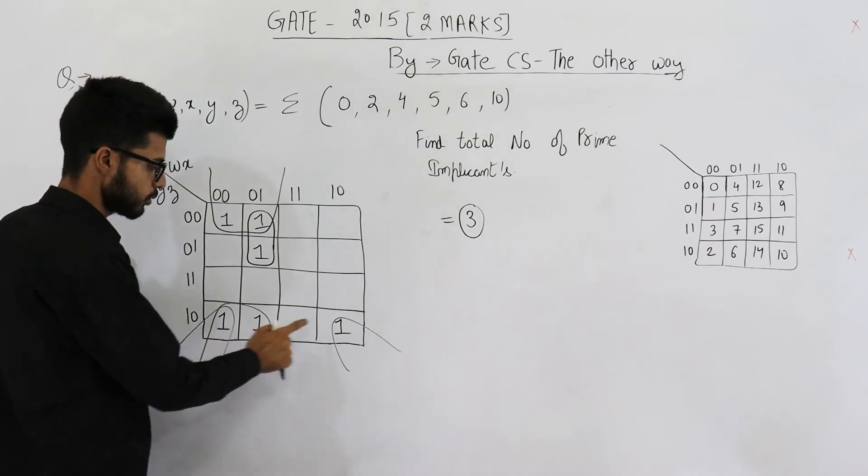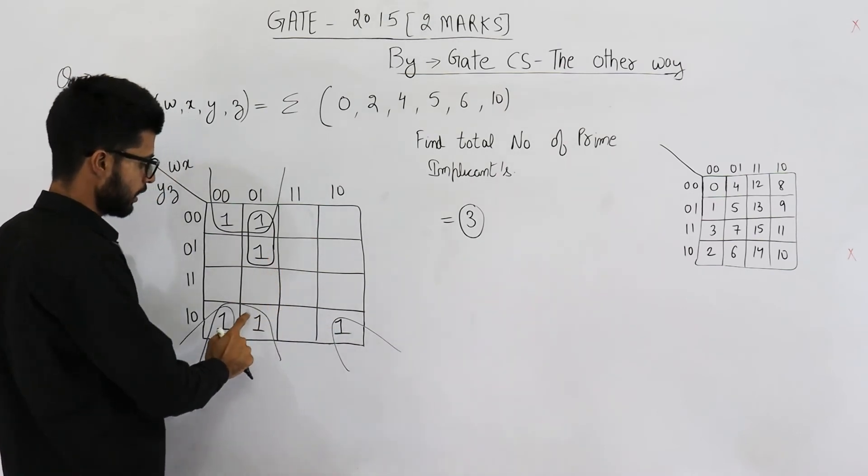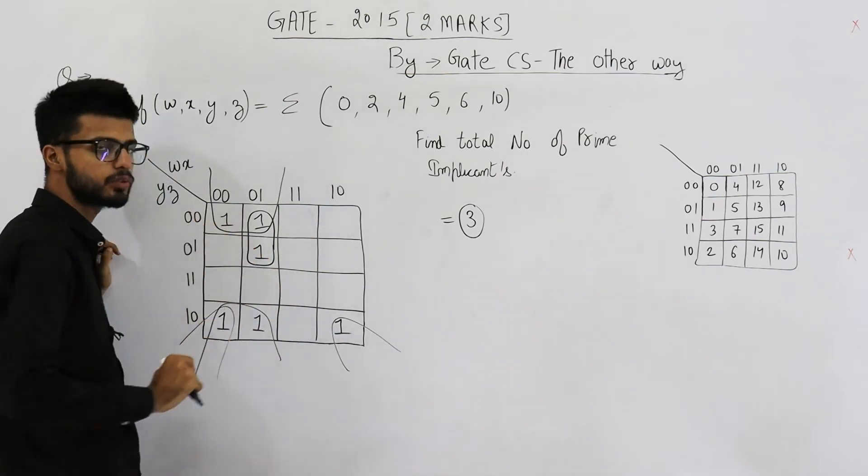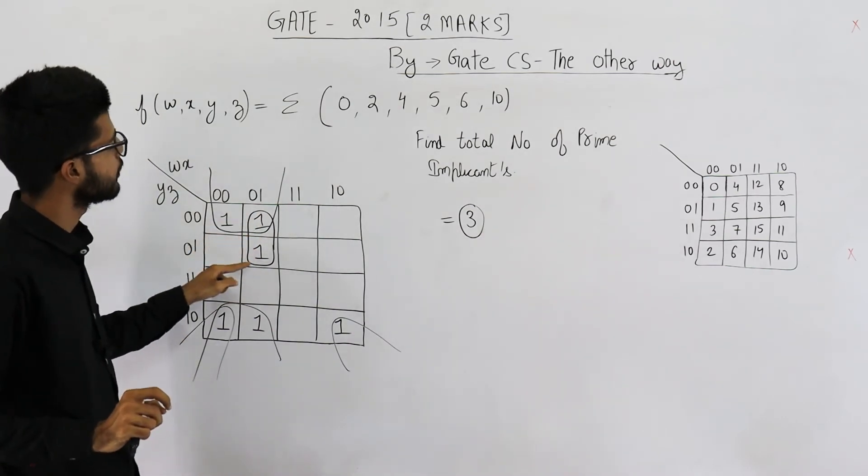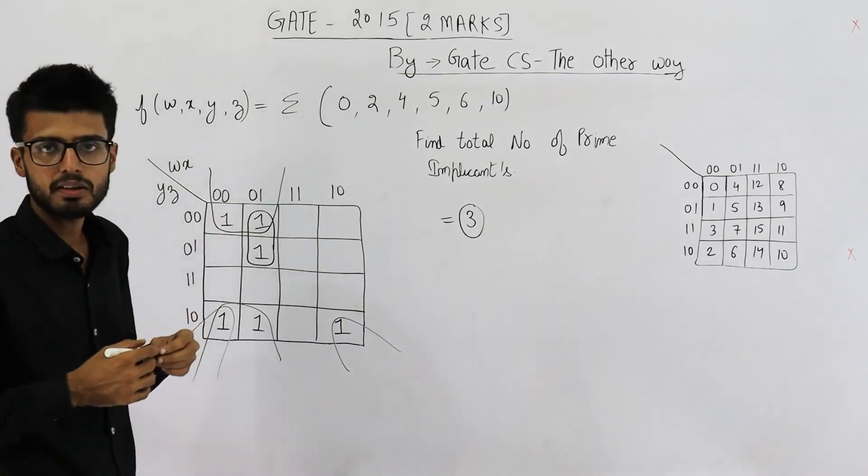1, that means these 2 are grouped, 1 prime implicant. 1, 2, 3, 4, these 4 are grouped, 1 prime implicant, and there is another 1 prime implicant. So total are 3.